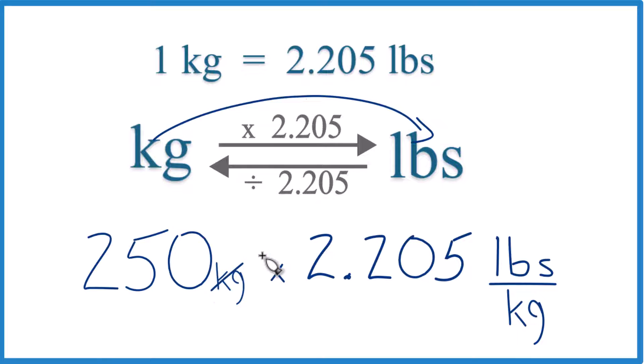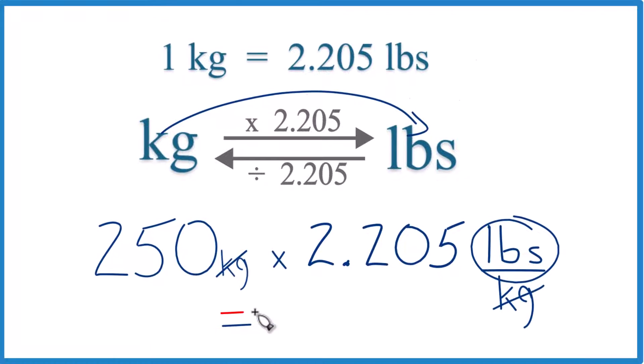Now when we multiply kilograms on top and the bottom, they cancel out. We're left with pounds. So we're just taking 250 times 2.205 pounds. We end up with 551.25.